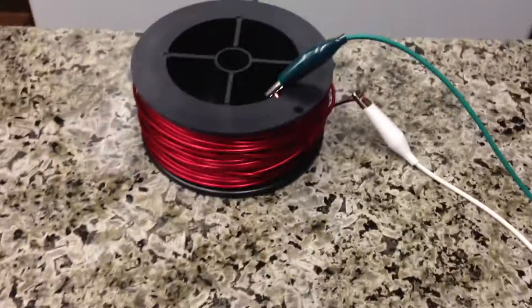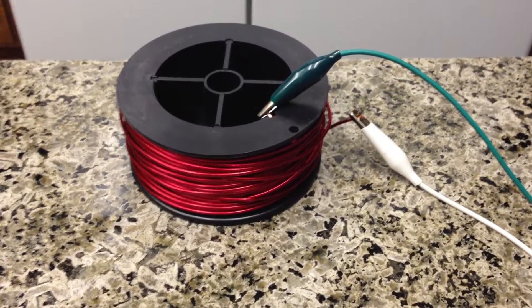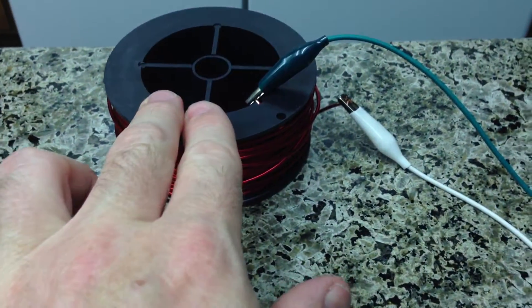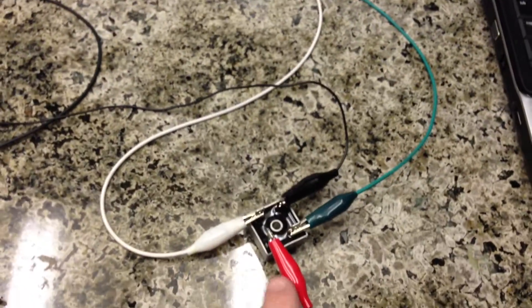So it started with this 14 gauge magnet wire right next to a fluorescent bulb that's on. And that induces the coil and produces an AC current, which is coming down to a full wave bridge rectifier.